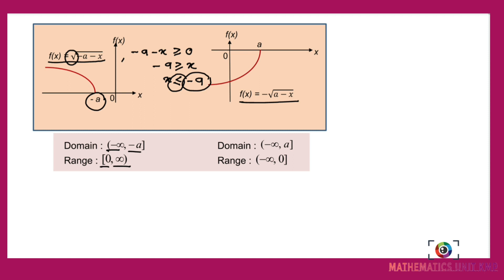For the final graph, f(x) equals negative √(a minus x), where a minus x is greater than or equal to 0, so x is less than or equal to a. The graph starts at a, goes to the left and downward because of the negative sign. The domain is from negative infinity to a and the range is from negative infinity to 0.